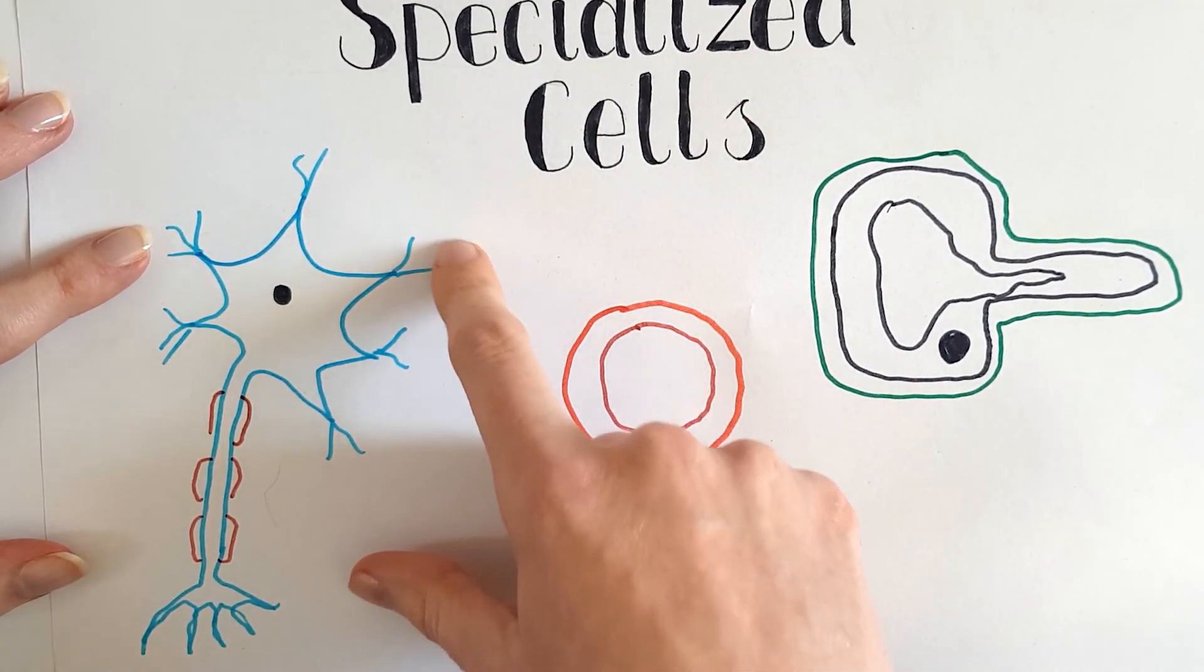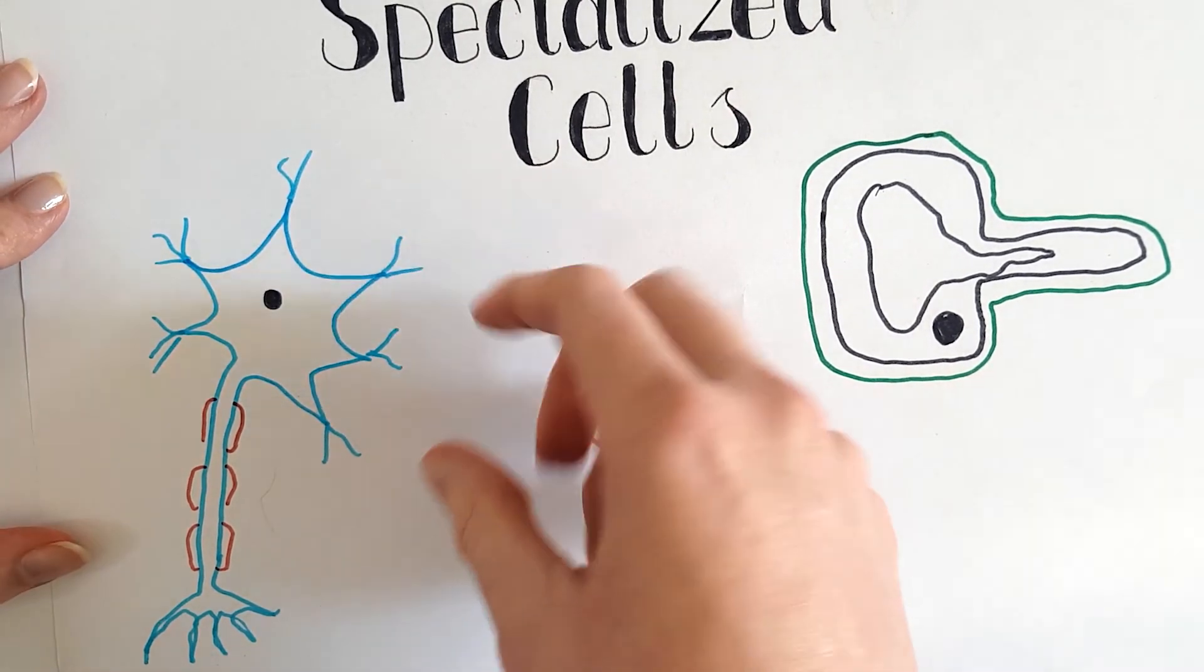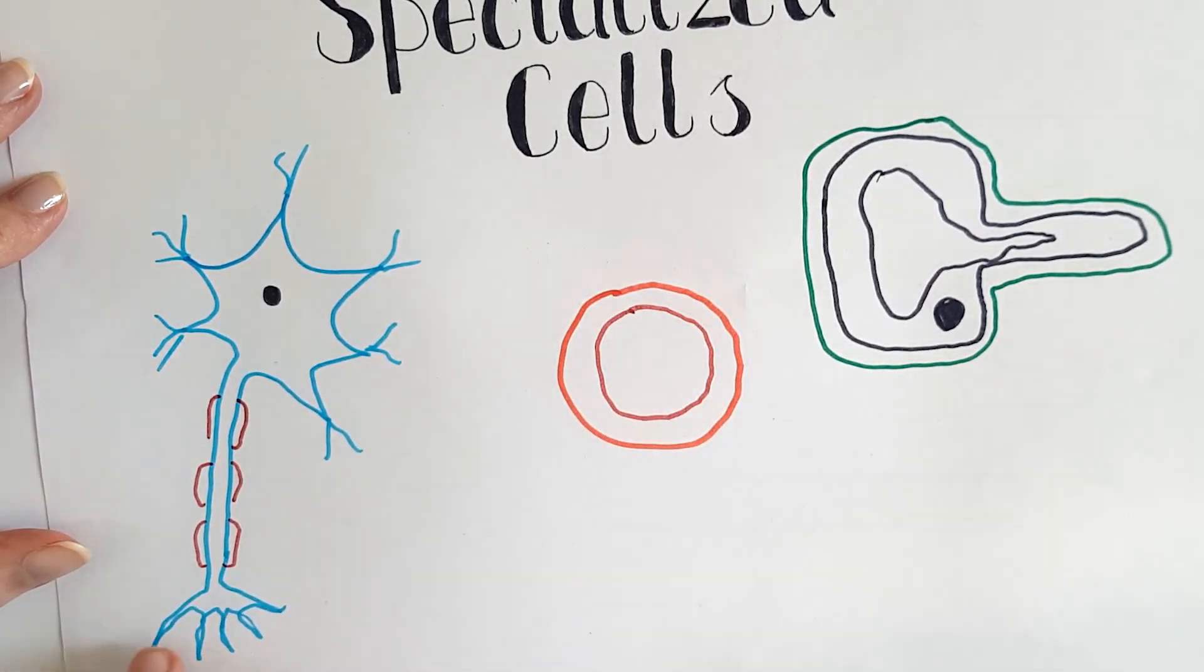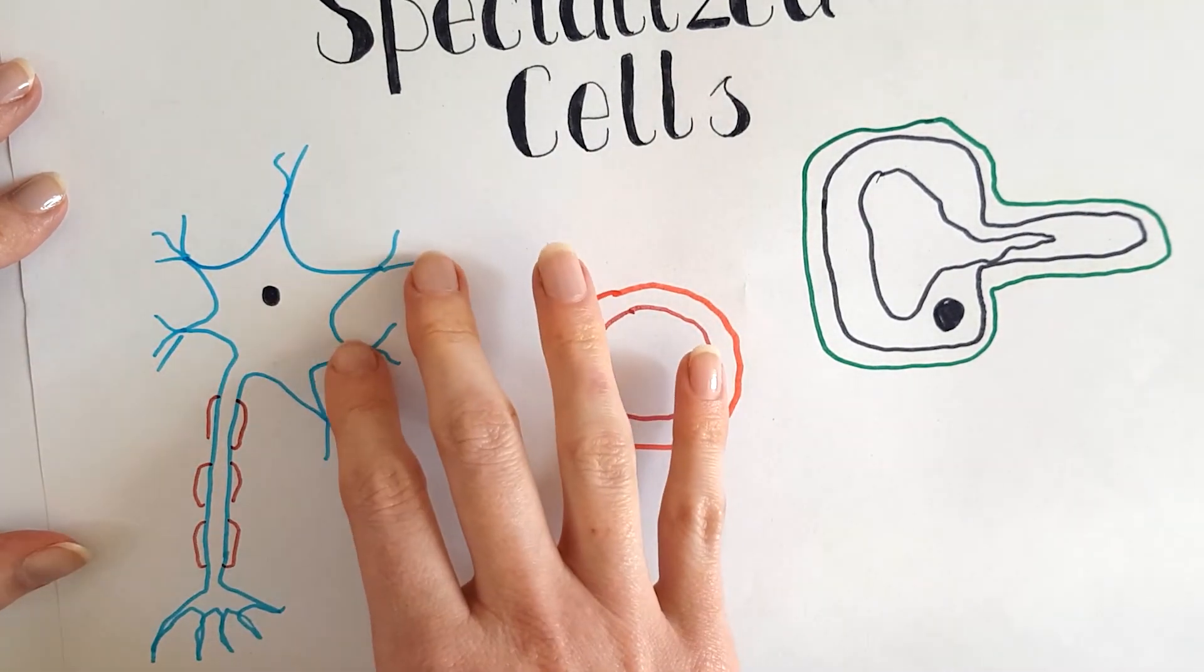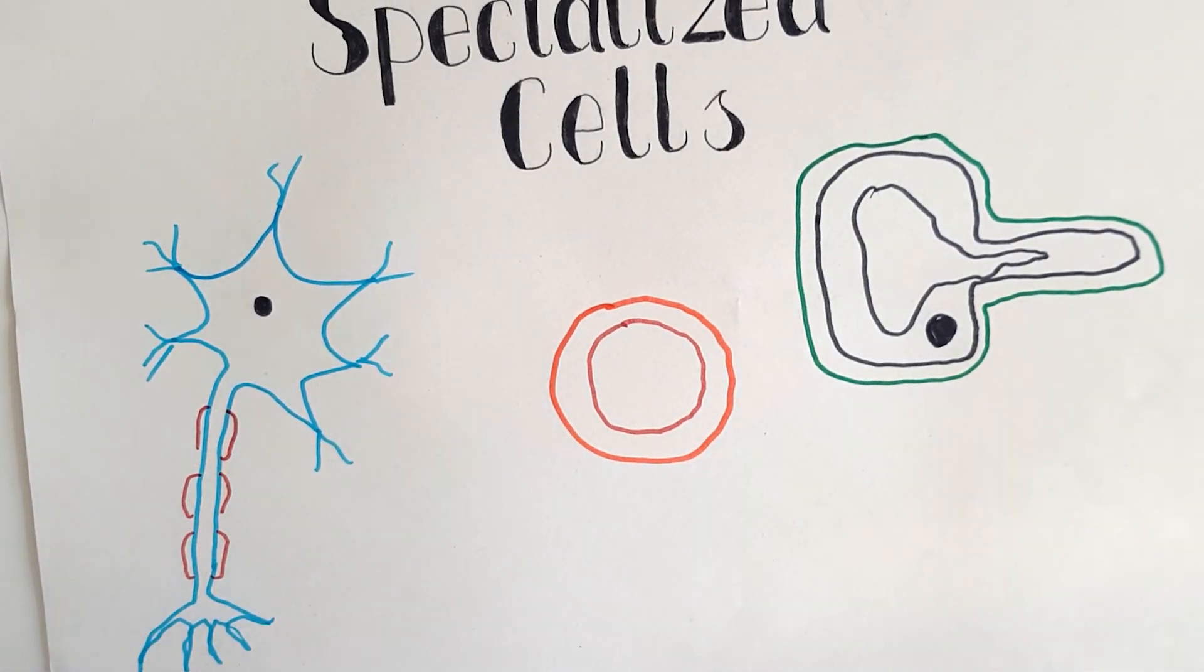Because of this they have these branches. So these branches will pick up information such as you touching something really hot and they will transport that information down into muscles. These little branches are in muscles and in sense organs to pick up and transport and send information to different parts of your body.